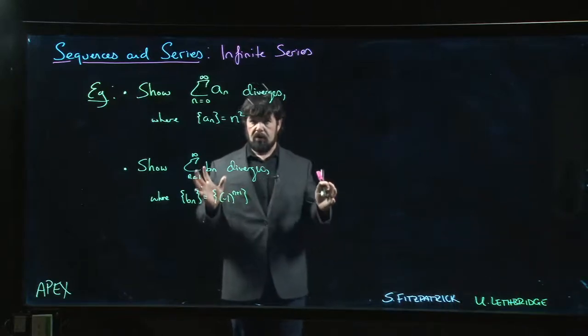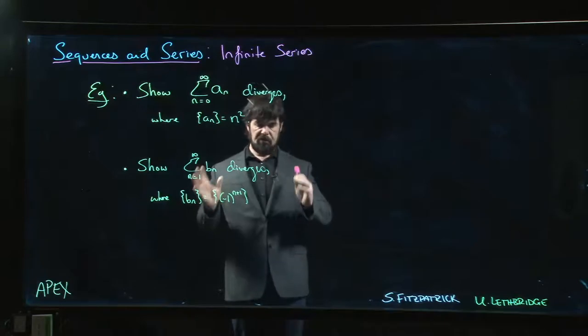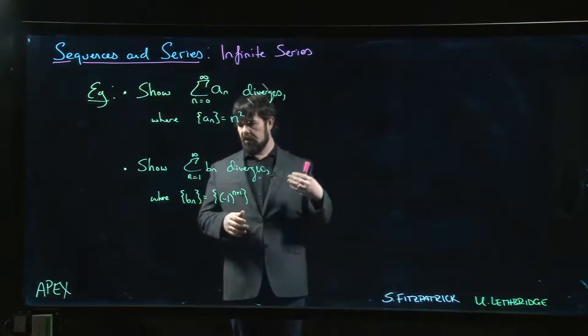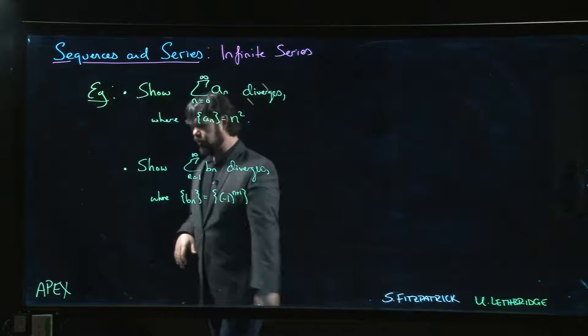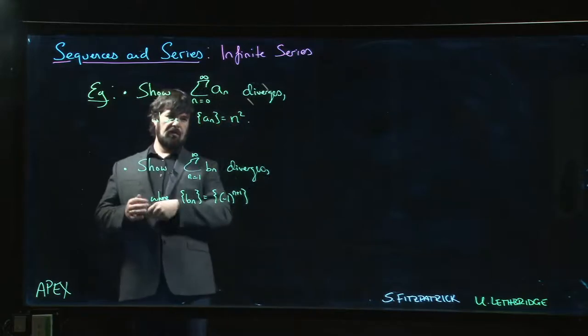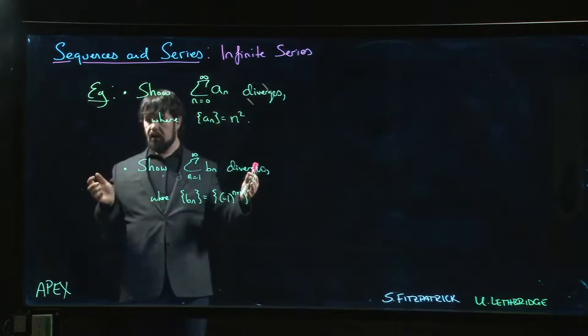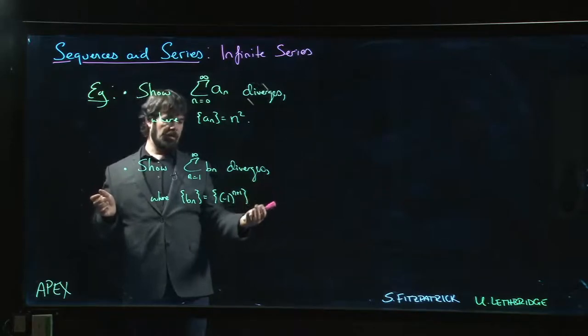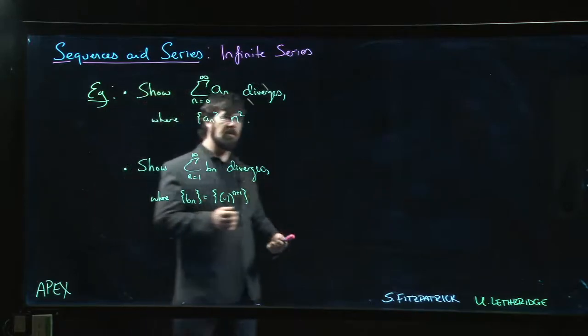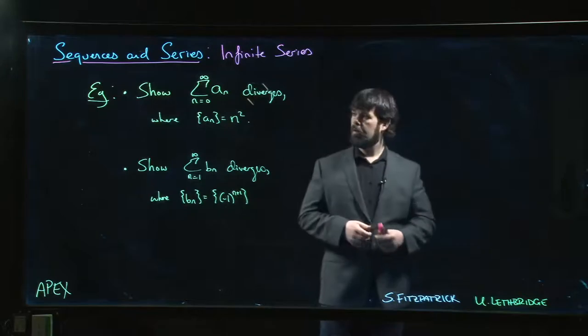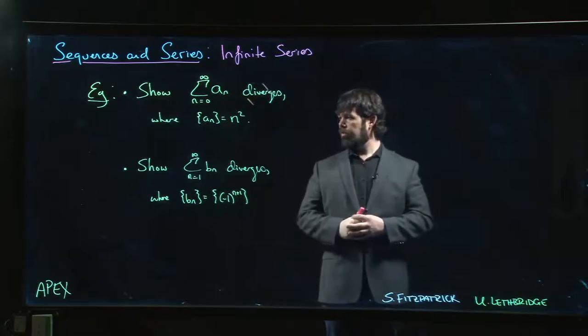In the last video we introduced the idea of a series as the limit of a sequence of partial sums for some pre-existing sequence. If that limit exists, we say the series converges. If it doesn't exist, we say the series diverges.